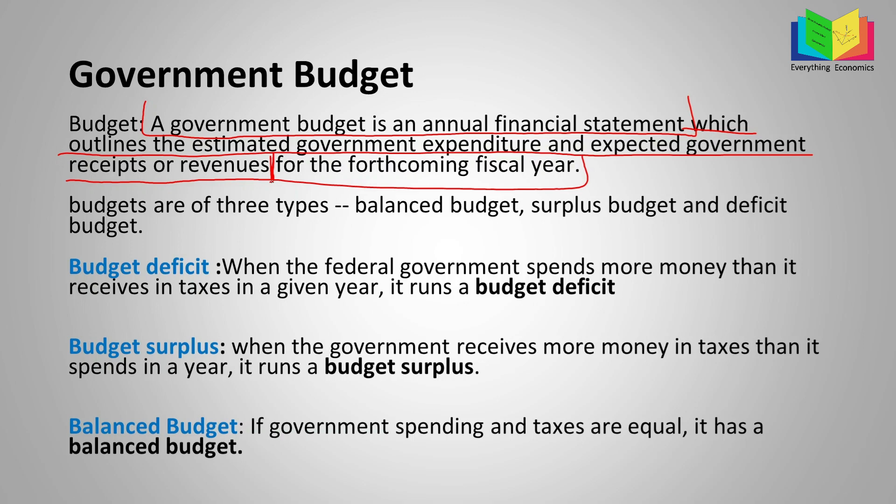Finally, 'for the forthcoming fiscal year' means that the budget is prepared before the year starts. For example, in 2020 the United States will be preparing the budget for 2021, because they want to have estimations of how much they would like to earn and how much they would like to spend for the people. That is the definition of budget.